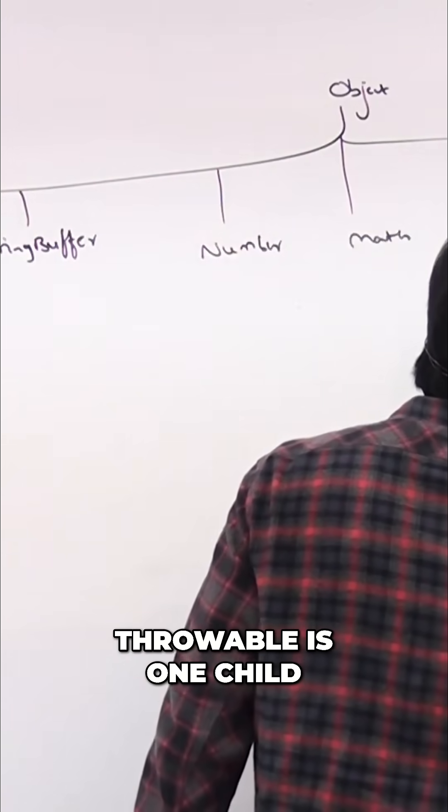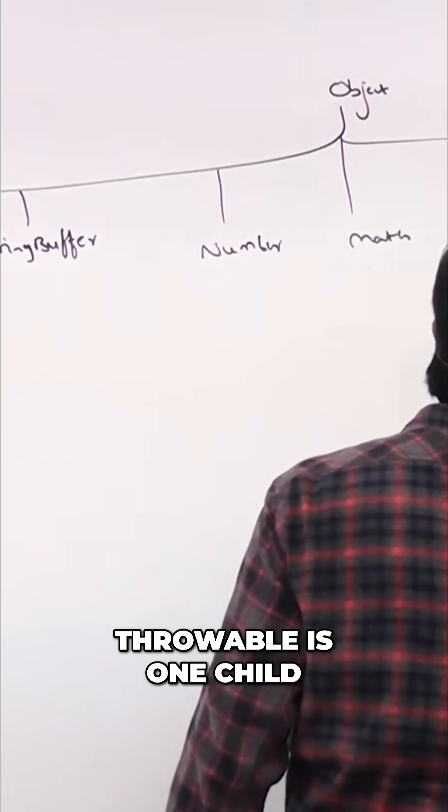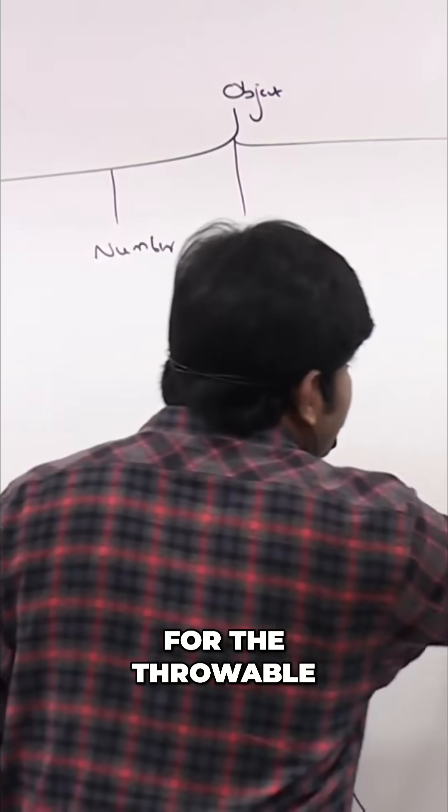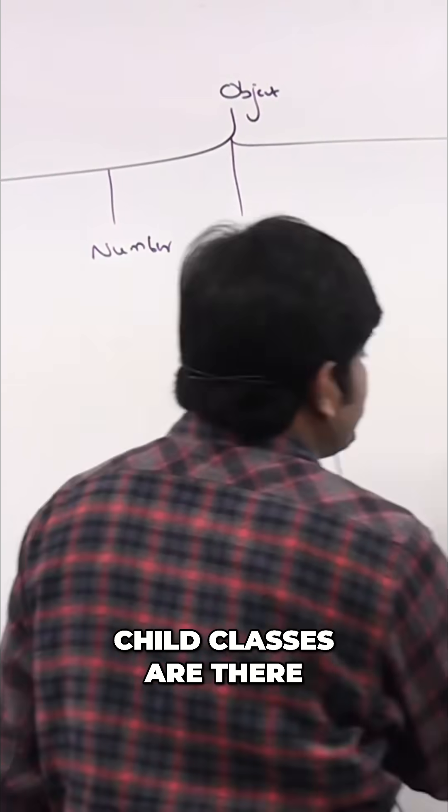Throwable is one child. For the Throwable there are again two children classes are there, sir.